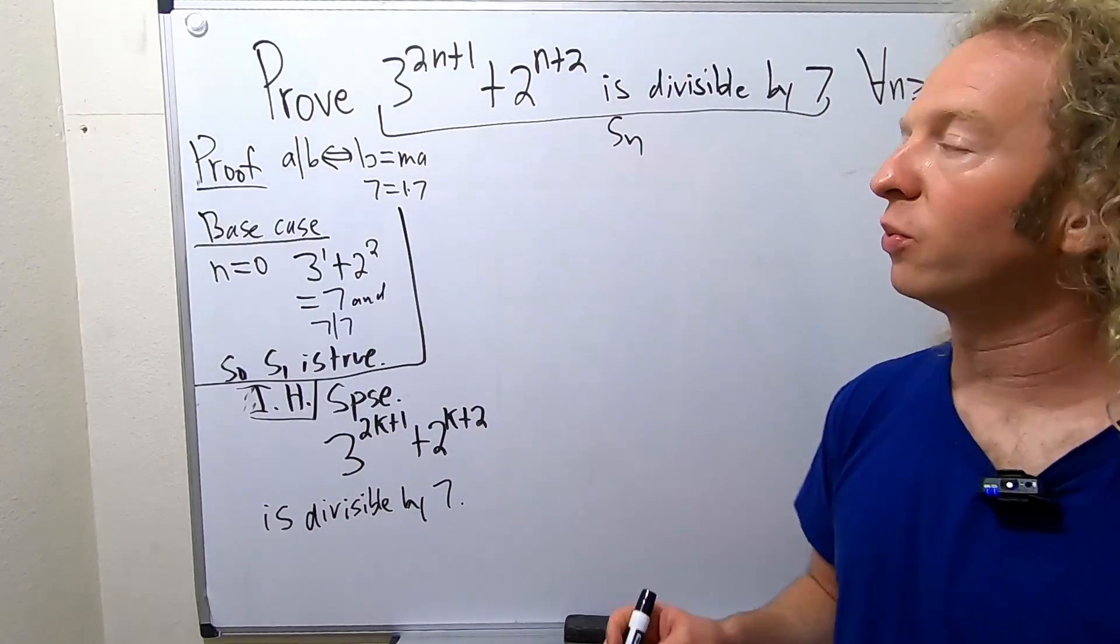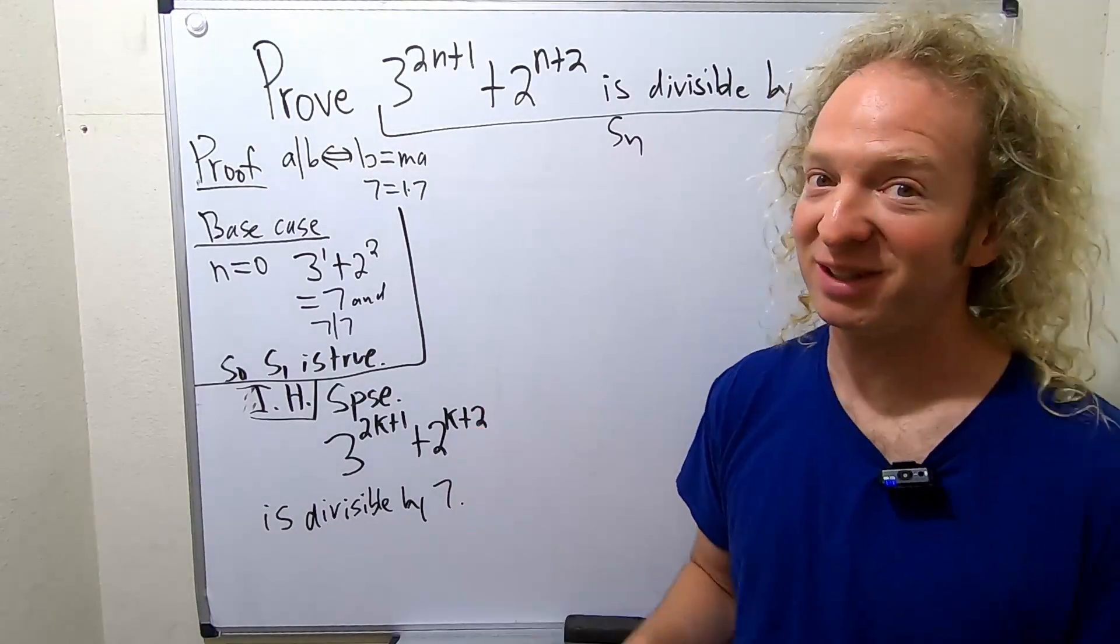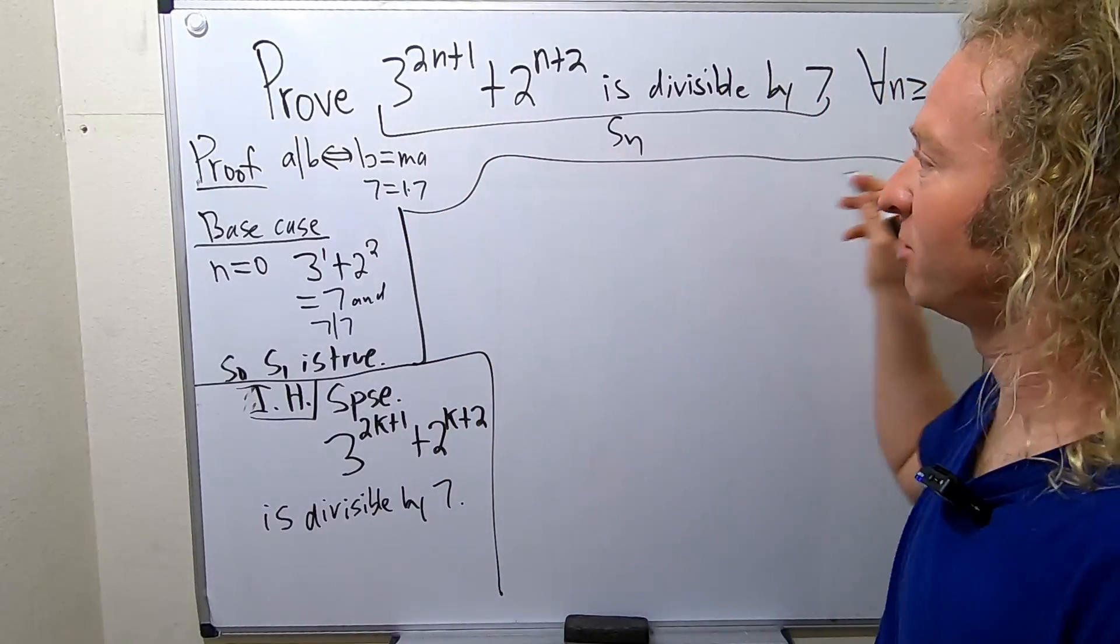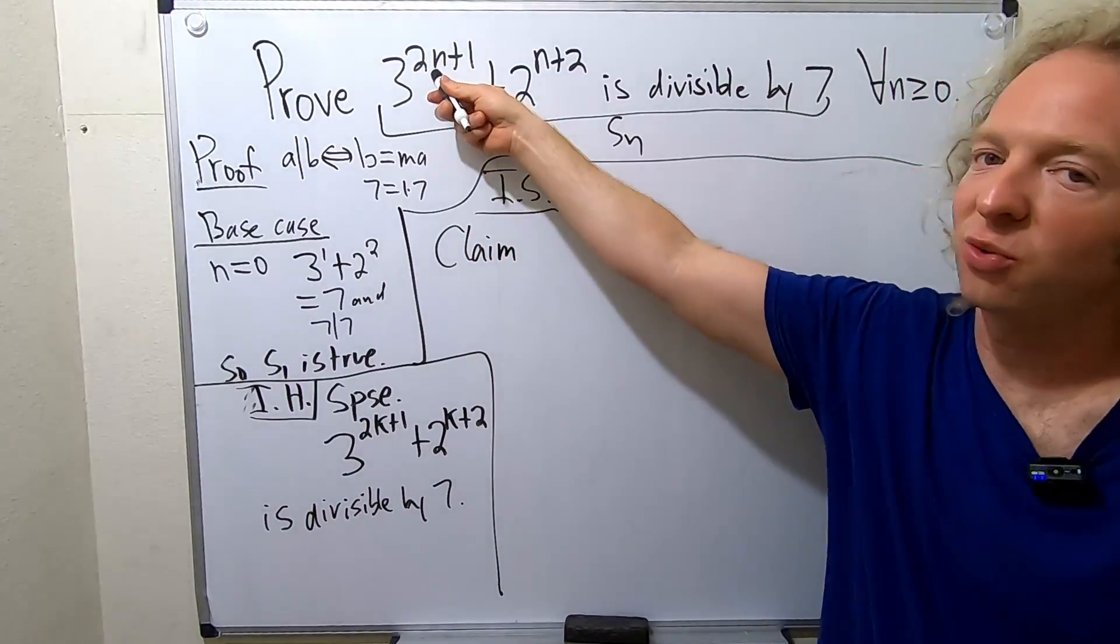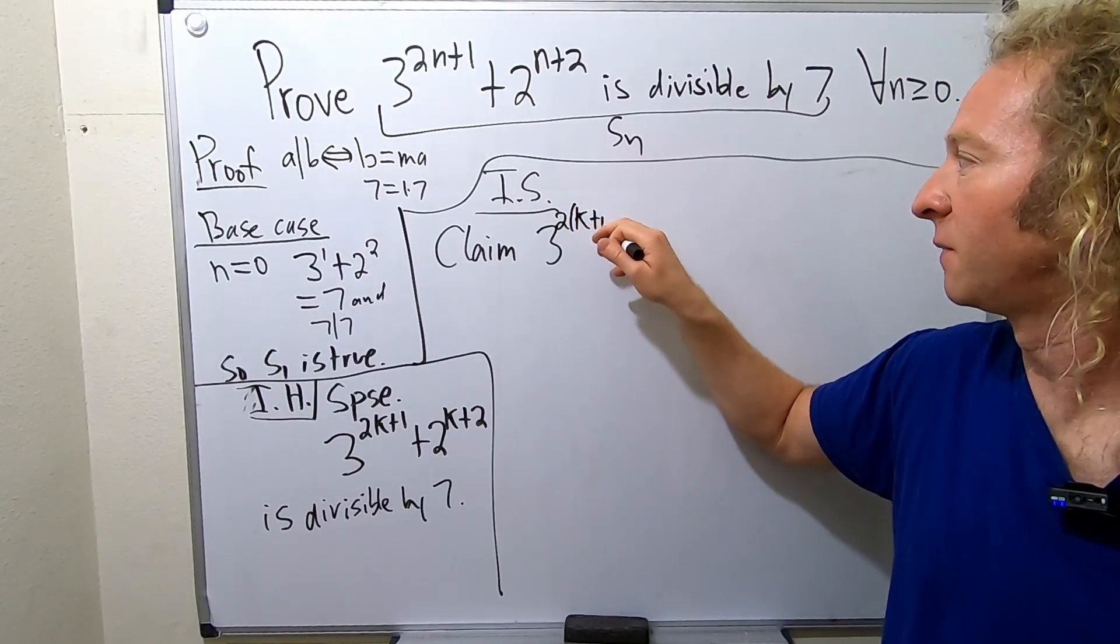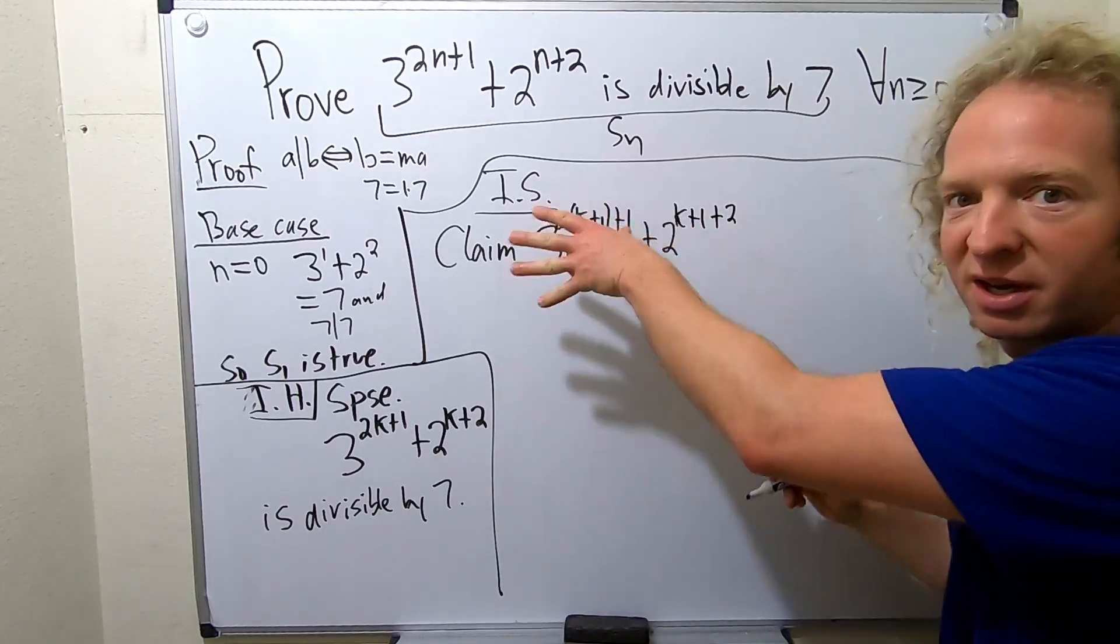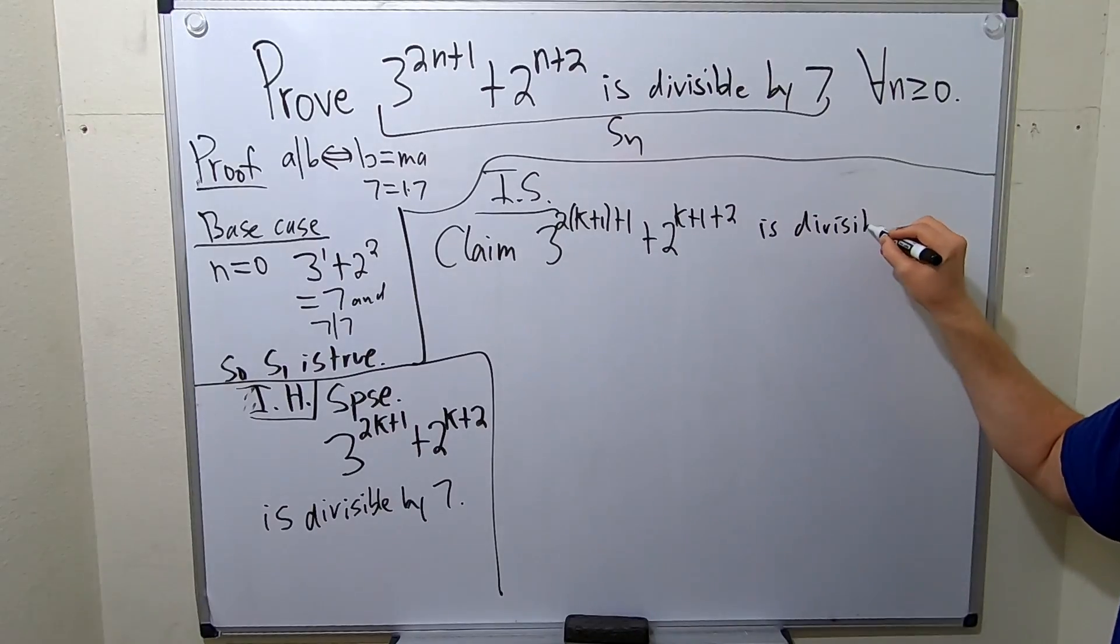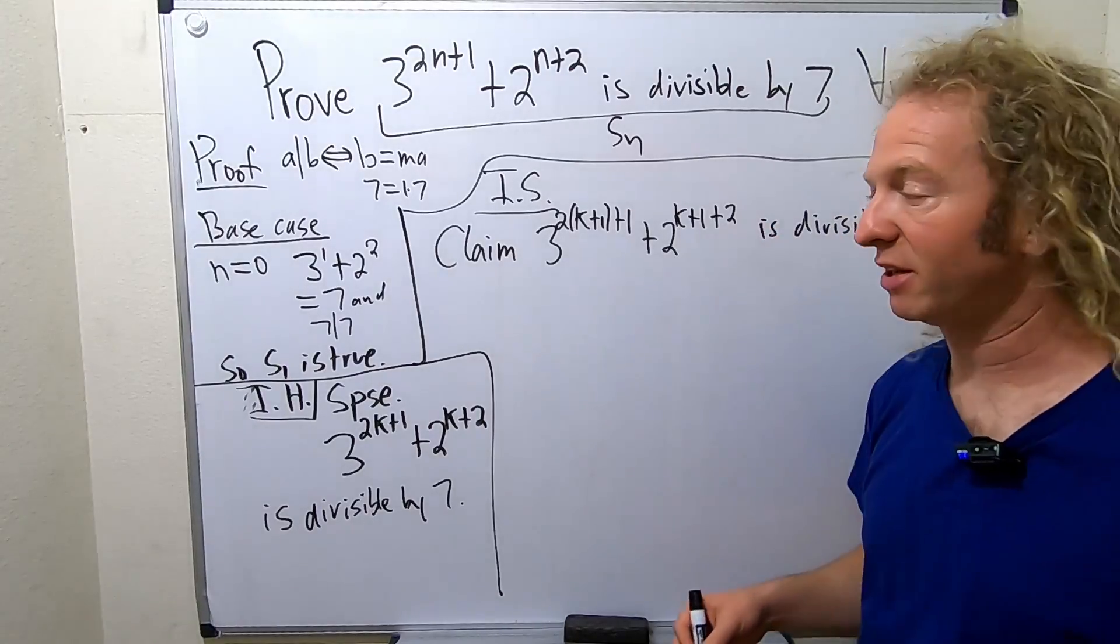Now we have to show that our statement is true when n equals k plus 1. This is where it's going to get really interesting. So this is our induction step. So claim that this is true when n is equal to k plus 1. So this is 3 to the 2k plus 1 plus 1 plus 2 to the k plus 1 plus 2. So we have to prove that this is divisible by 7. That's our goal, right? To show that this is divisible by 7.